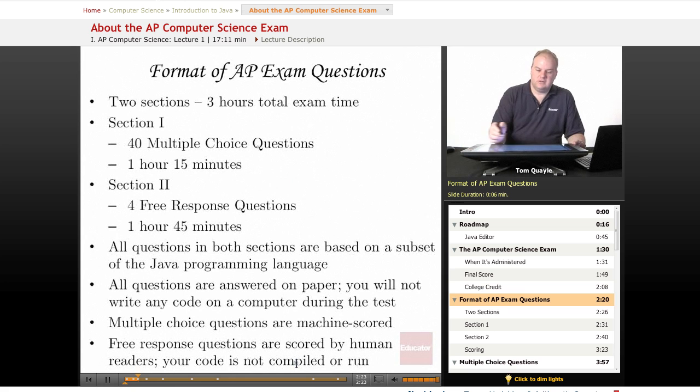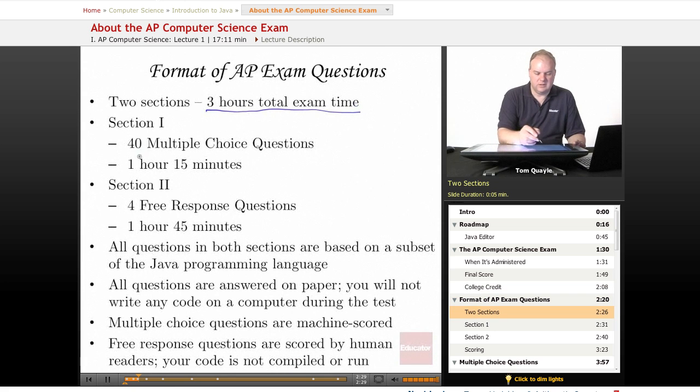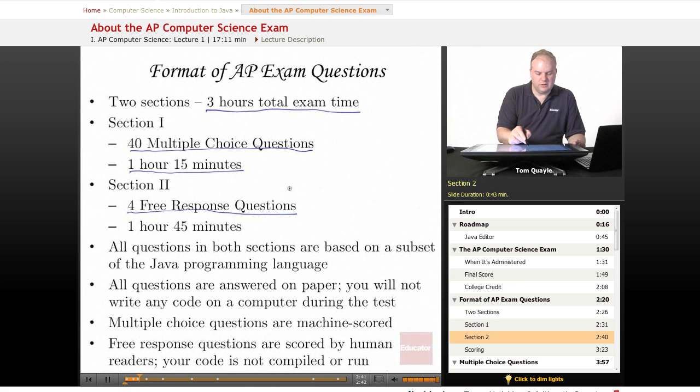There are two sections on the AP exam. You have a total of three hours to complete both sections. Section one is 40 multiple choice questions and you have one hour and 15 minutes to complete those. Then you'll get a short break between sections. Section two is four free response questions, which some people refer to as essay questions, and you have one hour and 45 minutes to complete those.